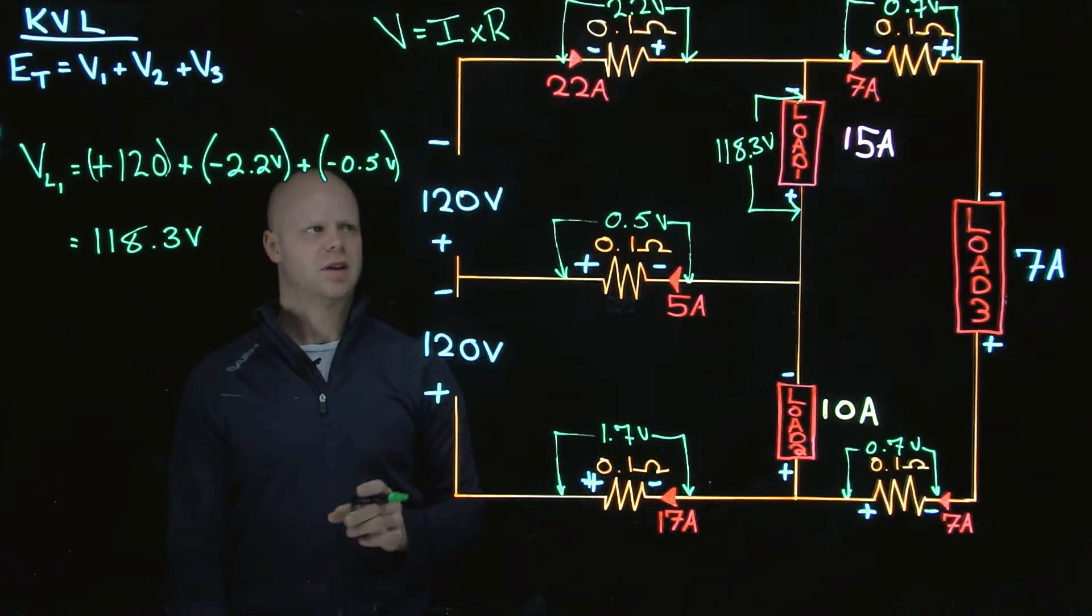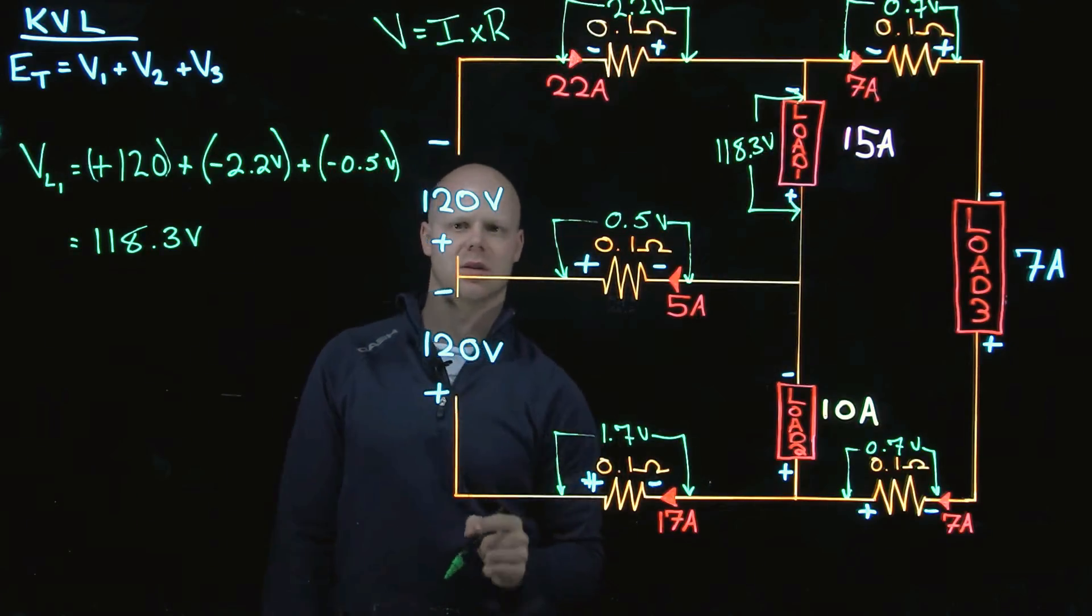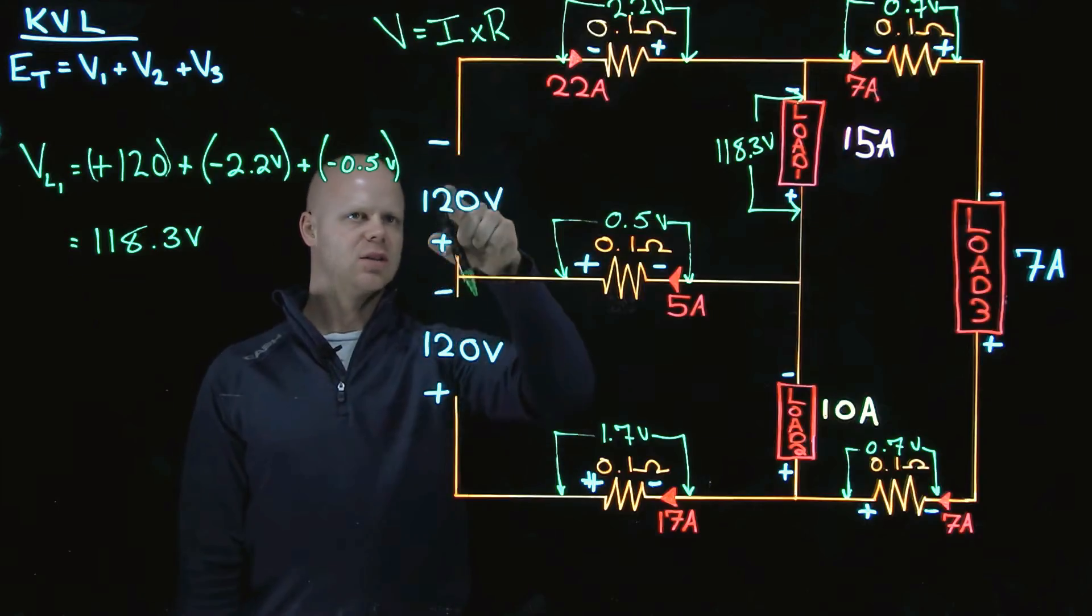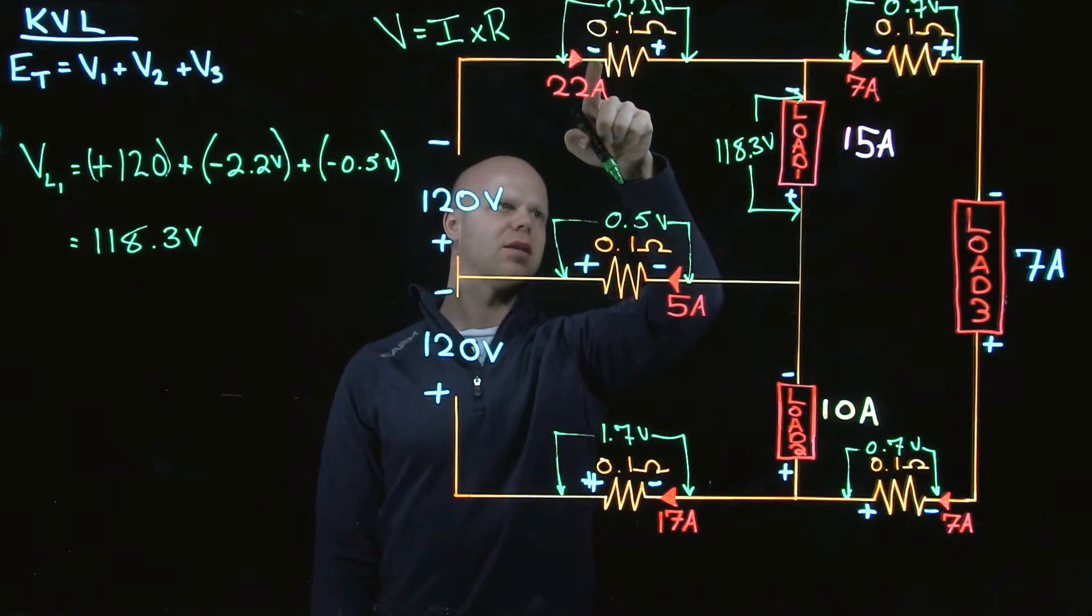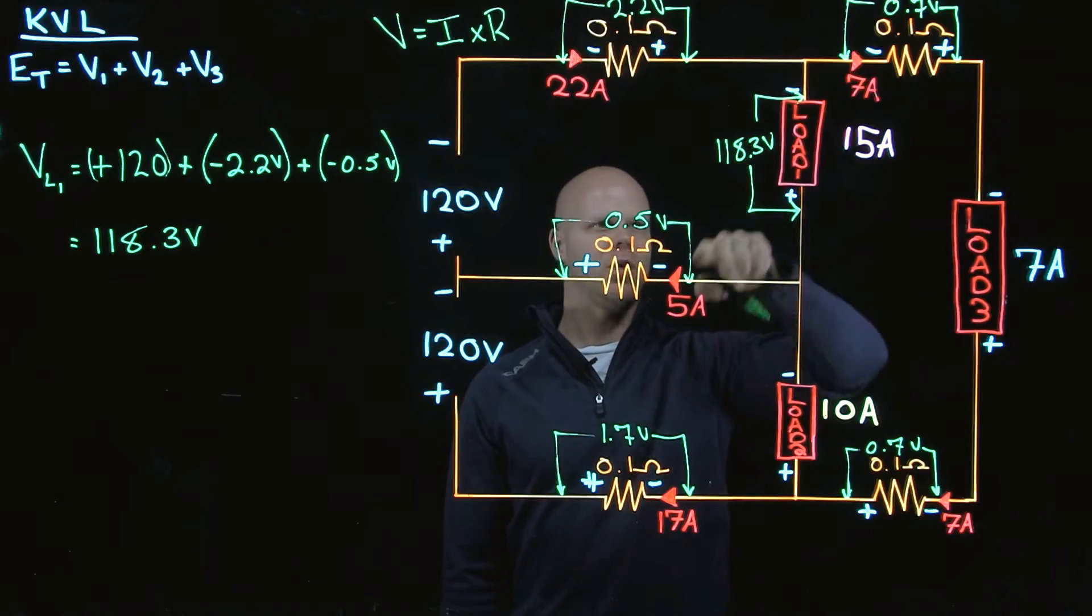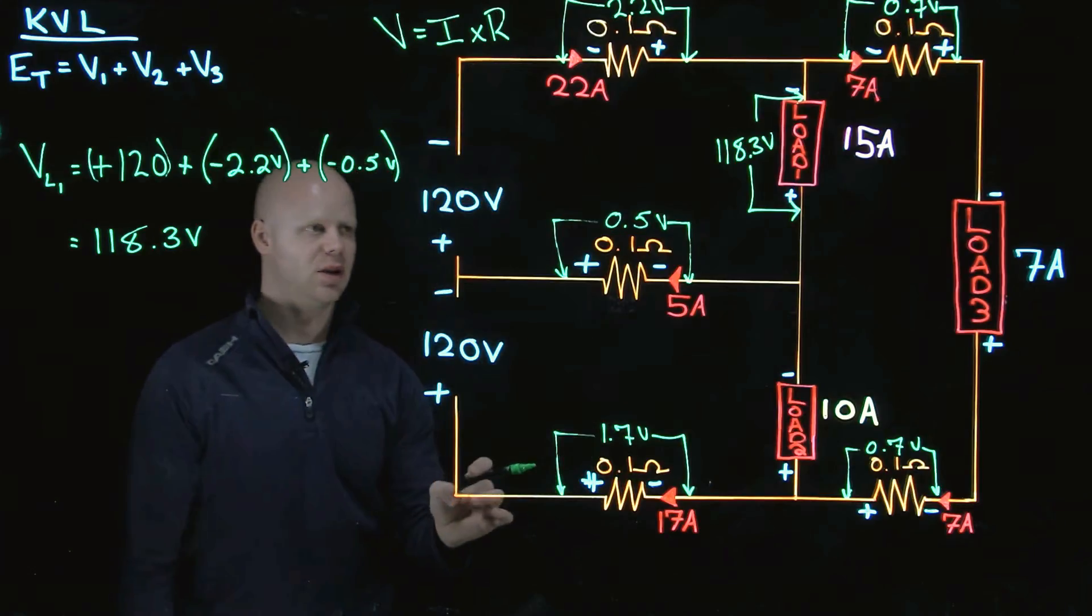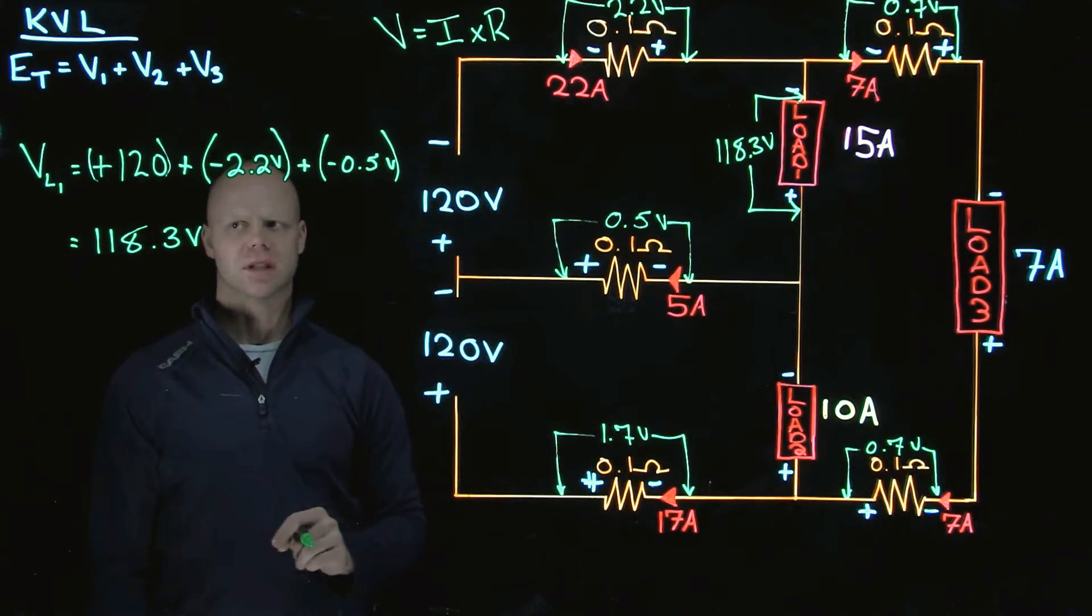Is it accurate? Close the loop. Start at the beginning and do every value. Will it equal zero? Will positive 120 plus a negative 2.2 plus a negative 118.3 plus a negative 0.5 equal zero? If it does, you have done this correctly.